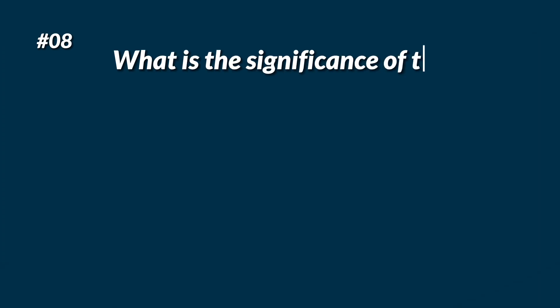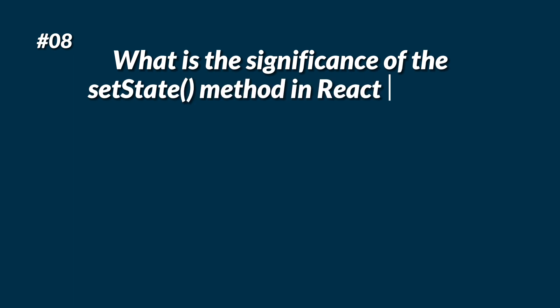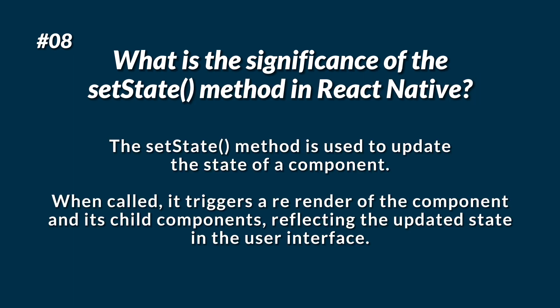What is the significance of the setState method in React Native? The setState method is used to update the state of a component. When called, it triggers a re-render of the component and its child components, reflecting the updated state in the user interface.